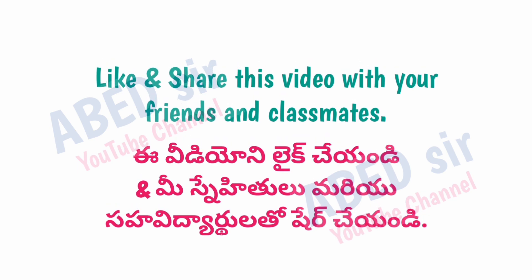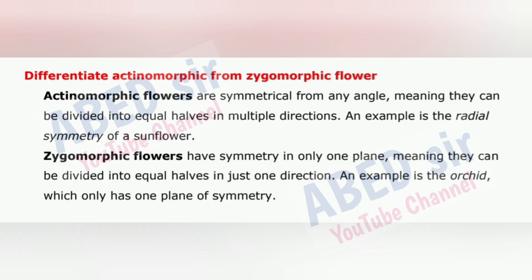Next important question: Differentiate actinomorphic from zygomorphic flower. Actinomorphic flowers are symmetrical from any angle, meaning they can be divided into equal halves in multiple directions. An example is the radial symmetry of a sunflower. Zygomorphic flowers have symmetry in only one plane, meaning they can be divided into equal halves in just one direction. An example is the orchid, which has only one plane of symmetry.